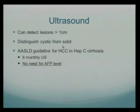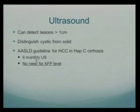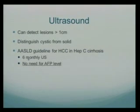Another significance of ultrasound: the current guidelines by the American Association for Study of Liver Diseases for hepatocellular carcinoma surveillance in hepatitis C cirrhosis recommend getting an ultrasound of the liver every six months. Previously, they also recommended getting AFP levels along with the ultrasound, but the current recommendation is just ultrasound — AFP is no longer favored.